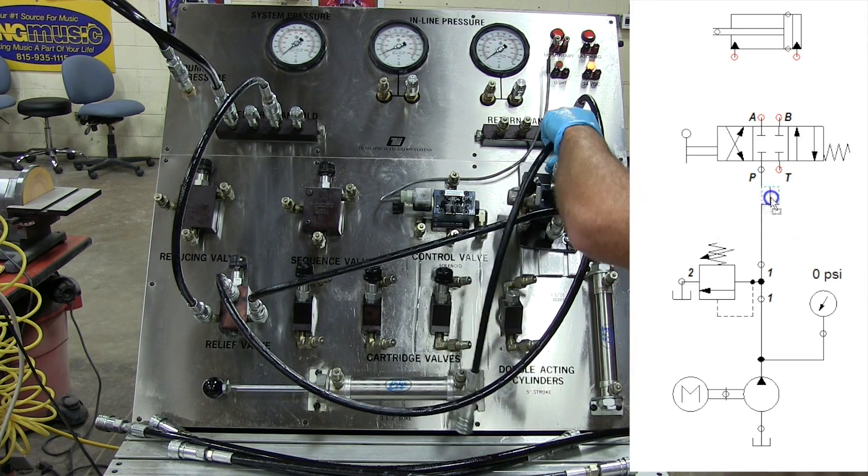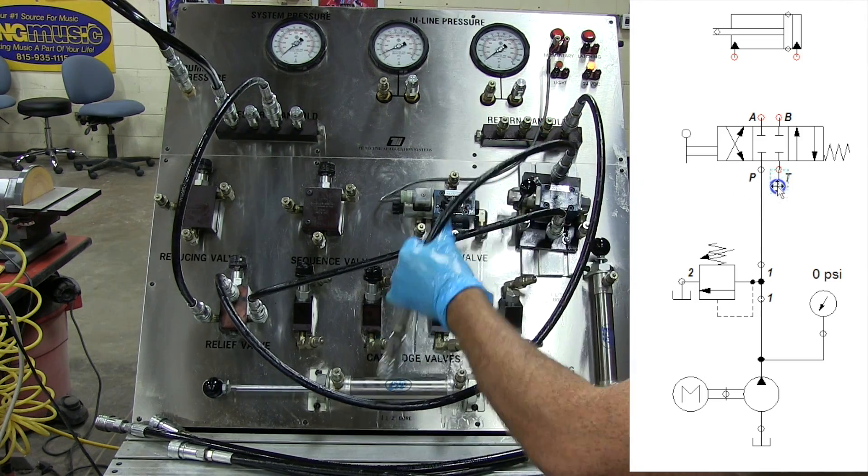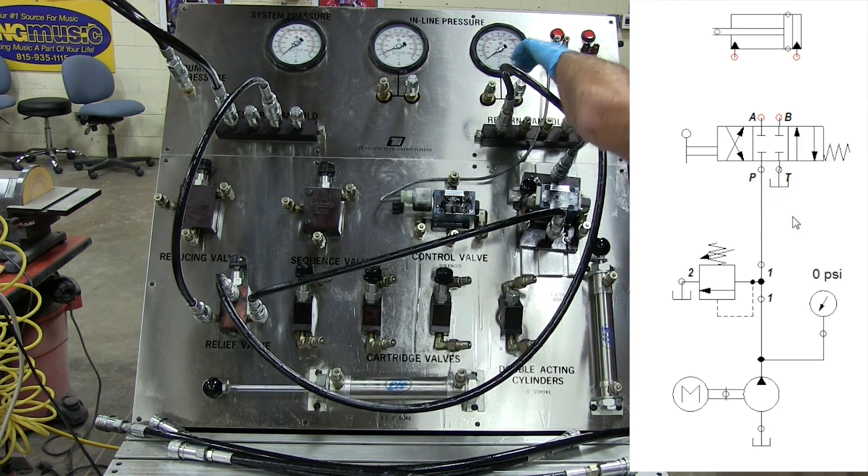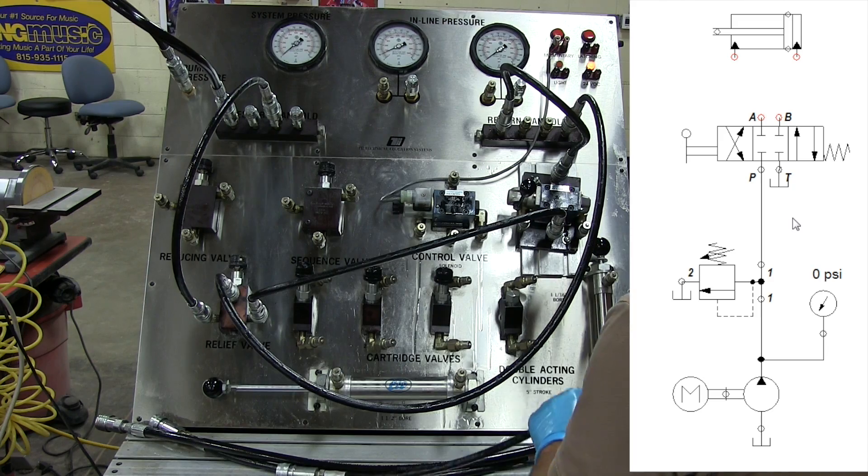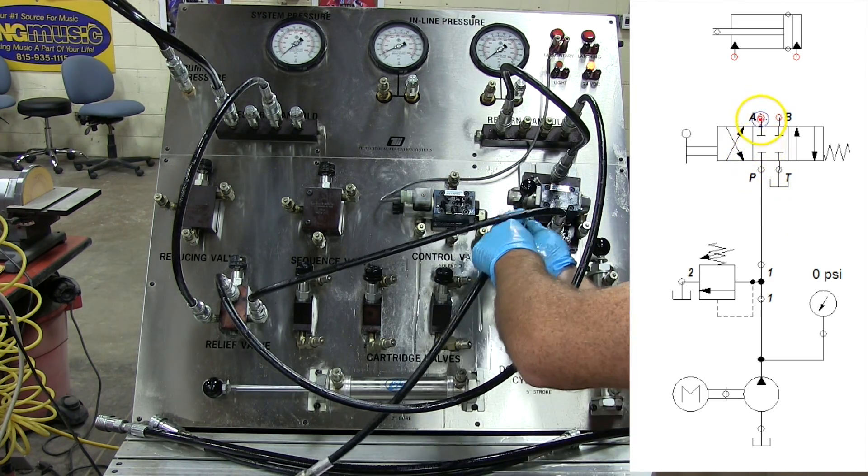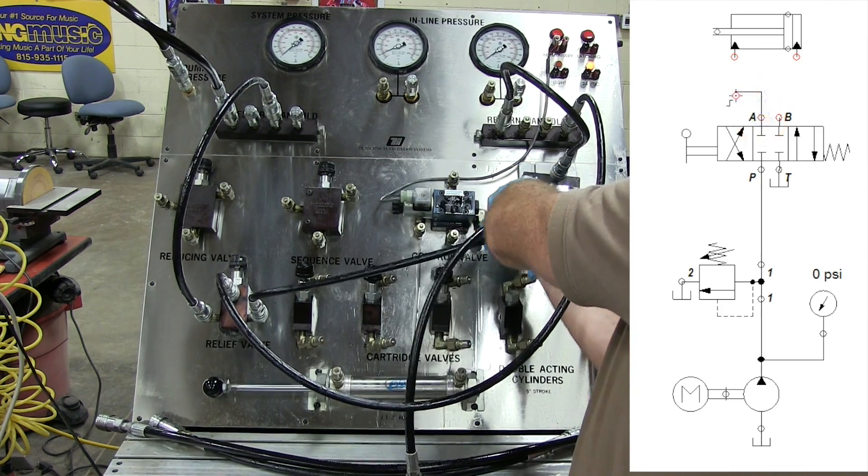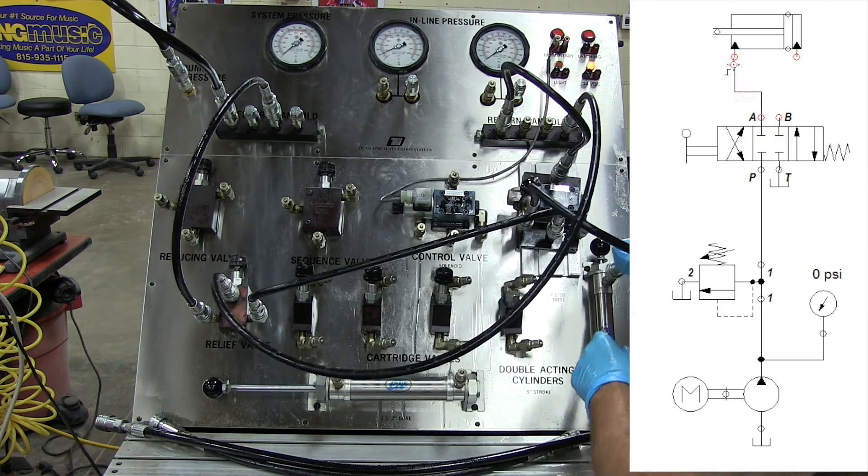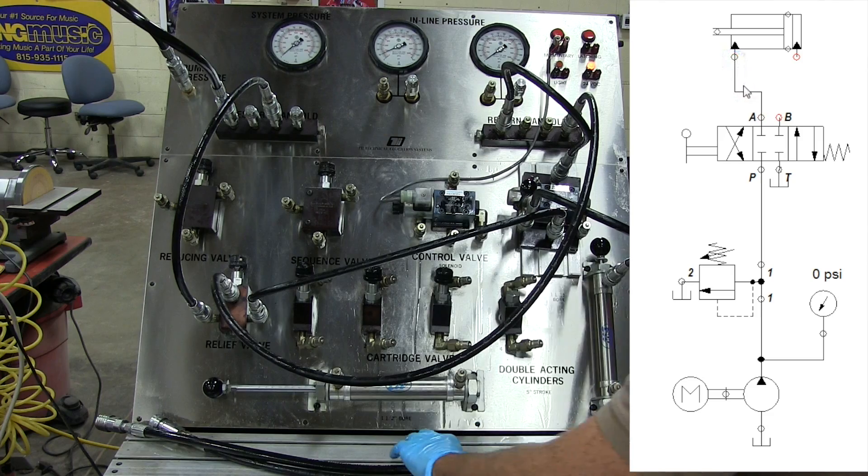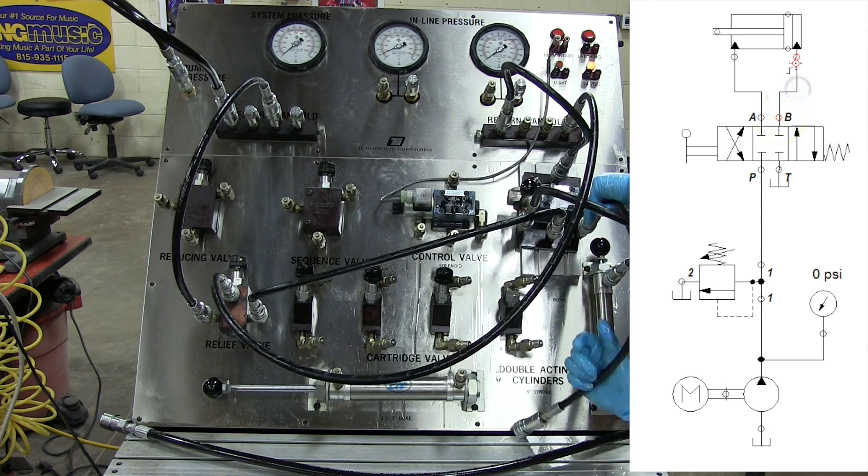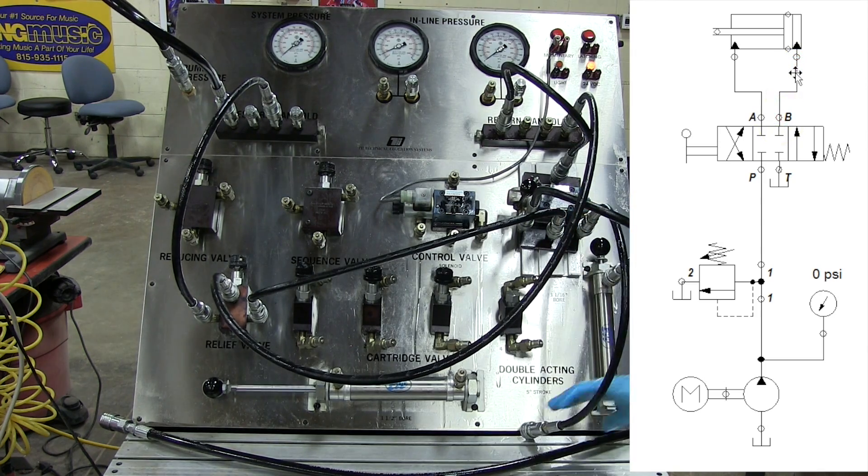So we'll take our tank up to here. And then we will take our A port, we're going to run this to the cap end, and the B port to our blind end.